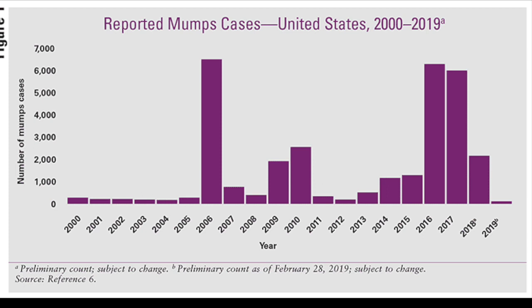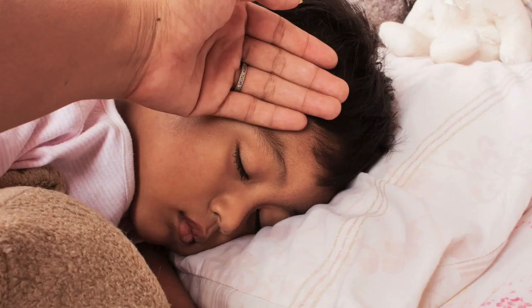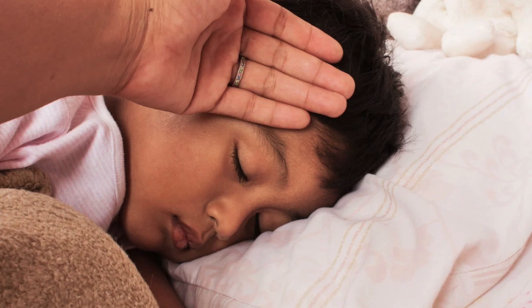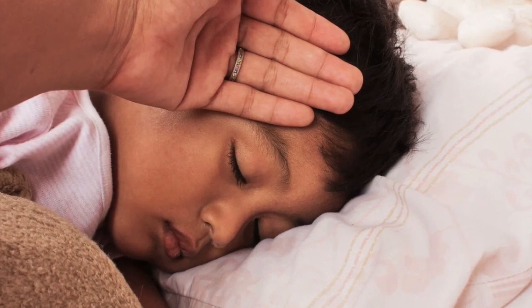In 2019, there were 1,546 reported cases of mumps in the U.S. In that same year worldwide, there were an estimated 651,000 reported cases of mumps, according to the World Health Organization. But what exactly is the mumps, and how does it affect our bodies? Well, in this video, we'll take a closer look at the science behind the mumps virus, its history, and its impact on human health.